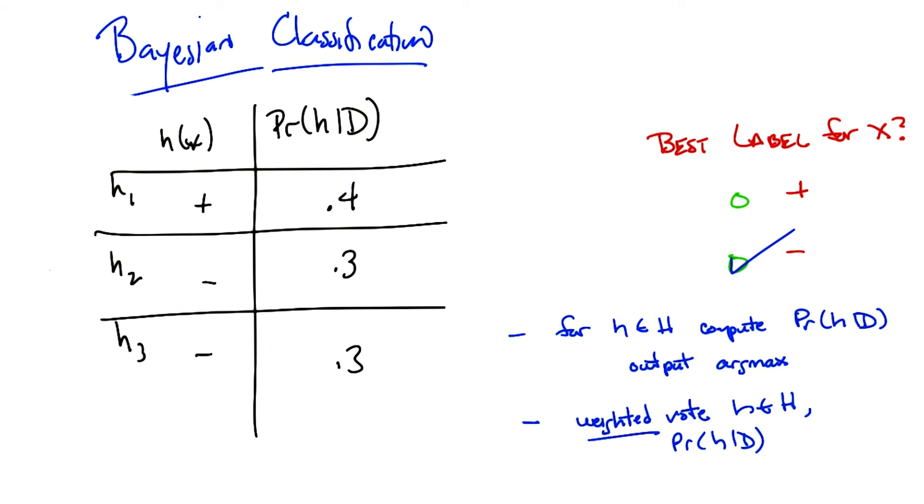And I feel like I could probably derive that using rules of probability, right? Because really what we want is we're trying to maximize the probability of the label given the data.